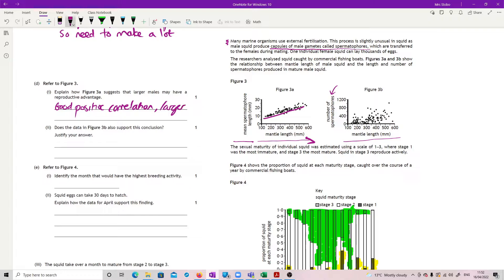So basically, good positive correlation. So larger males make, not more, actually. Let's be very clear on the terms here. Make larger or longer spermatophores, which equals more male gametes.